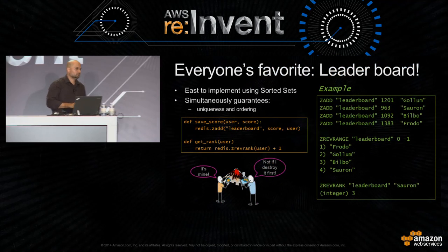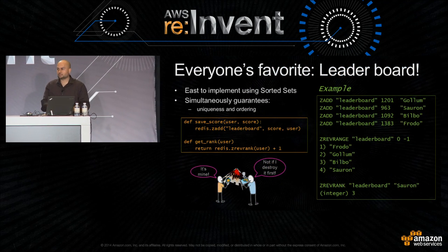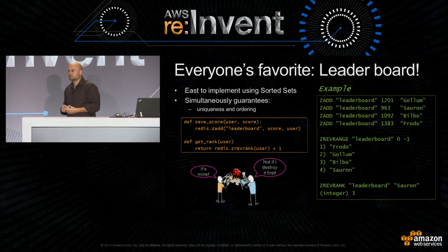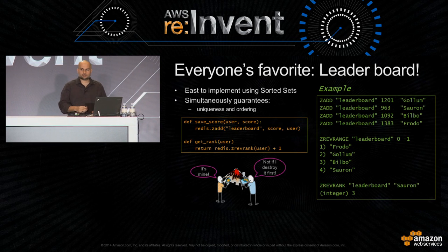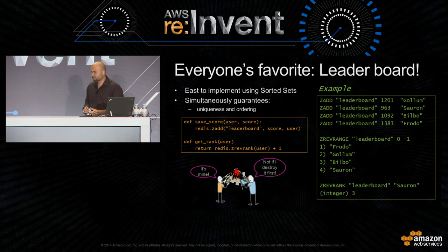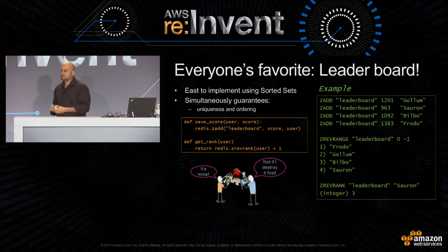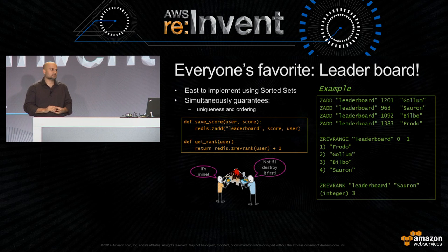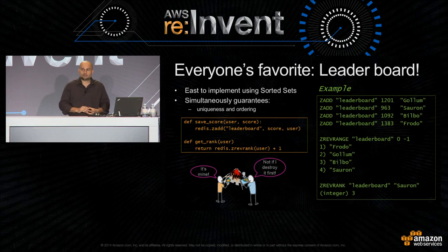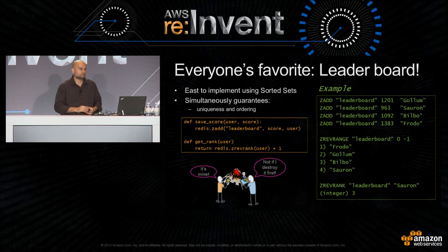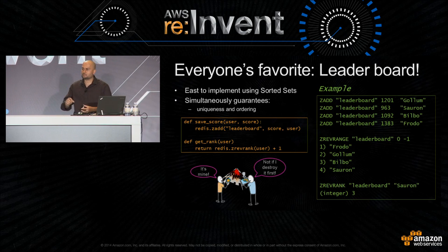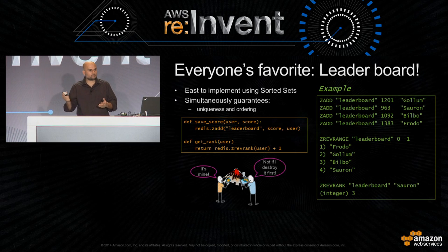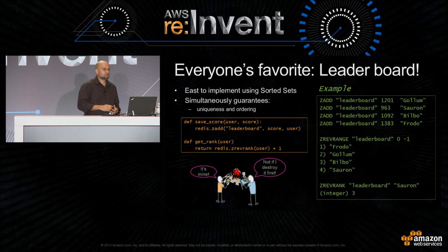Redis supports a lot of commands, one of them being sorted sets. Sorted sets give you the ability that whenever you add something into a sorted set, it's guaranteed uniqueness and ordering. A real popular use case is leaderboards. I realize not everybody here is making games, but any business — even a retail business — has a critical metric. Everybody is sitting on some critical metric that drives their business. Usually you can come up with one critical metric that everybody wants to know at that moment. The closer you can get to real-time with that metric, the better. Nothing is going to be as fast as this.